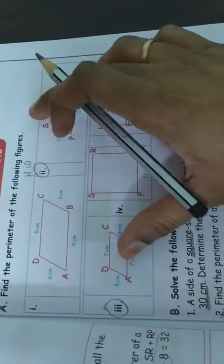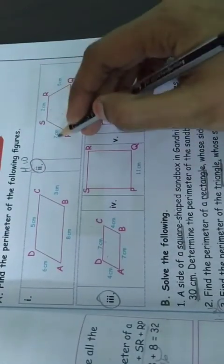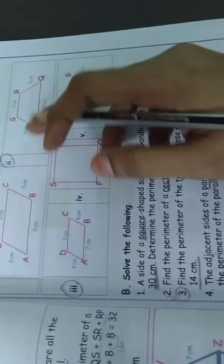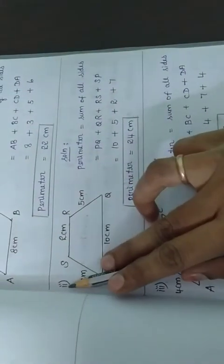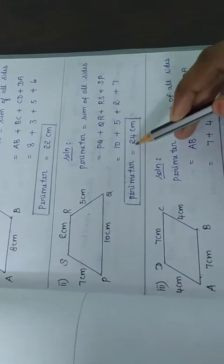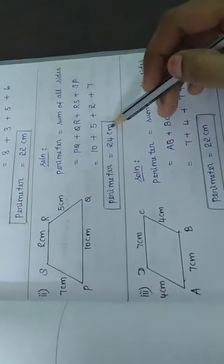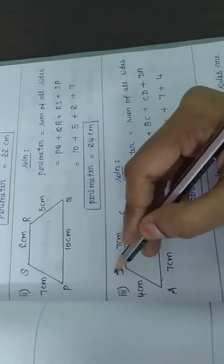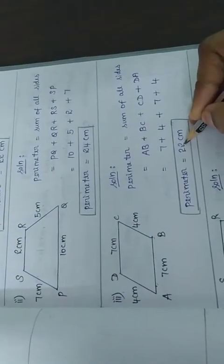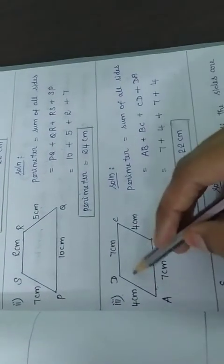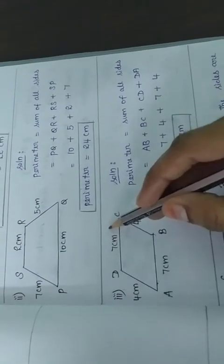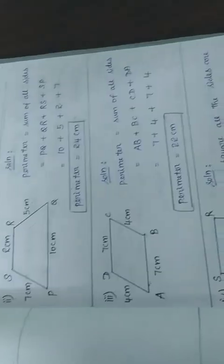In our last class, I gave homework for the second and third sums. The second sum answer: perimeter equal to 24 cm. We are adding all the sides. The third sum answer: perimeter equal to 22 cm. Same — we are adding all the sides.